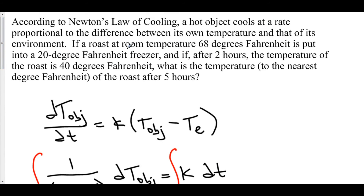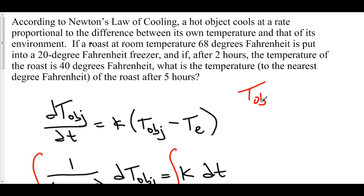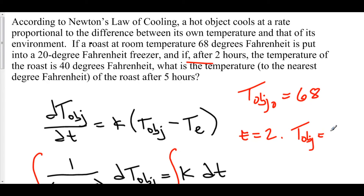We know that the room temperature is 68 degrees Fahrenheit, so the initial temperature of our roast is 68. T-object-not equals 68. We also know that at time t equals 2 hours, the temperature of the roast is 40 degrees Fahrenheit, so T-sub-object equals 40. Furthermore, the roast is being put into a freezer, so T-sub-environment equals 20.